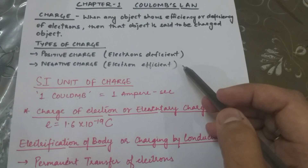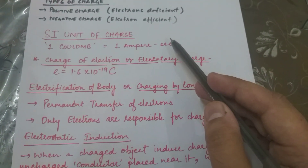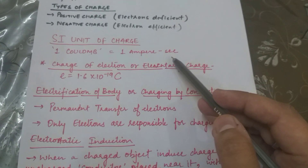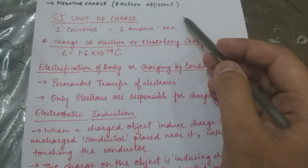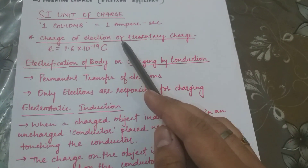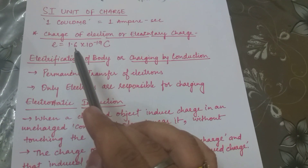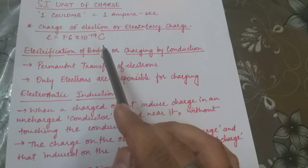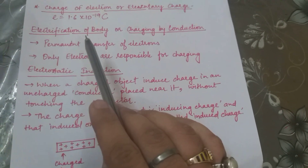Similarly, if any object shows an excess of electrons, it is a negatively charged object. The SI unit of charge is one coulomb. One coulomb is equal to one ampere multiplied by one second. One more important thing to understand is the charge of one electron, or elementary charge. The charge of one electron is equal to 1.6 × 10⁻¹⁹ coulombs.